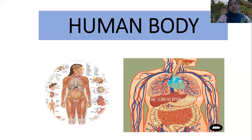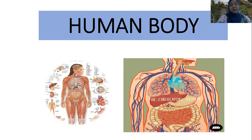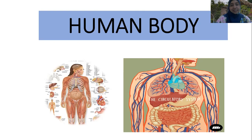We need to understand what organs support each system, what parts of the organ support its function, how the organ functions, and what kind of problems can happen to that organ. As we know, we have so many systems in our body. Can anyone tell me what systems we have?